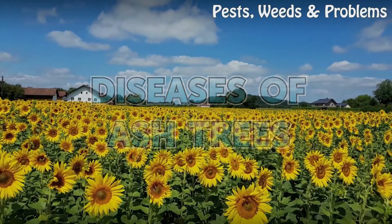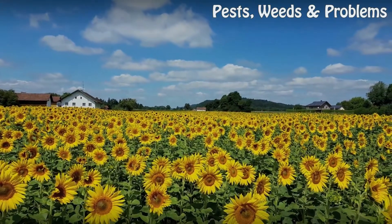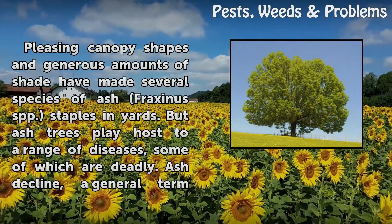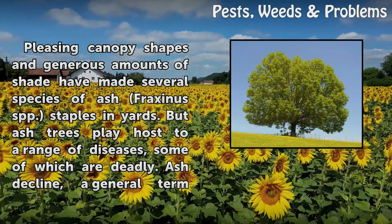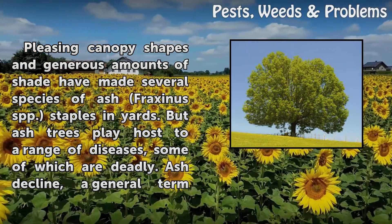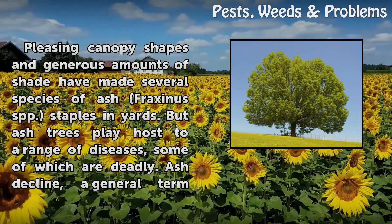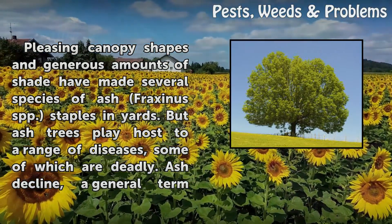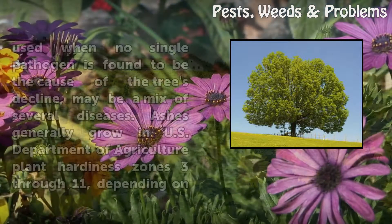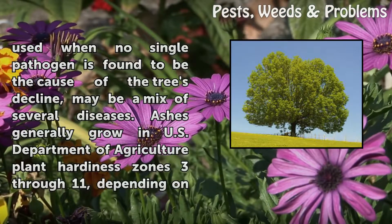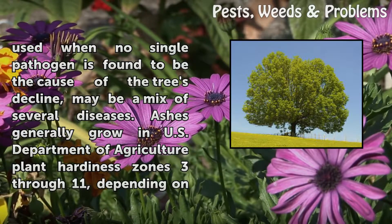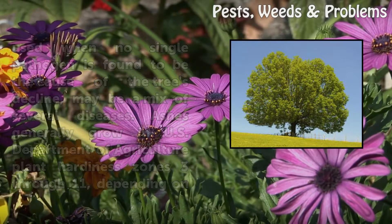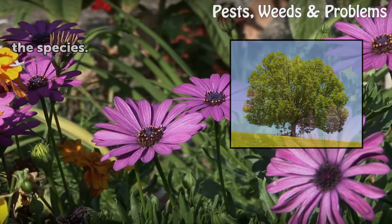Diseases of Ash Trees. Pleasing canopy shapes and generous amounts of shade have made several species of Ash popular staples in yards. But Ash trees play host to a range of diseases, some of which are deadly. Ash decline is a general term used when no single pathogen is found to be the cause of the tree's decline, and may be a mix of several diseases. Ashes generally grow in USDA plant hardiness zones 3 through 11, depending on the species.